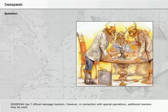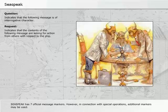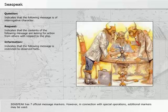The marker 'Question' indicates that the following message is of interrogative character. 'Request' indicates that the contents of the following message are asking for action from others with respect to the ship. 'Information' indicates that the following message is restricted to observed facts.